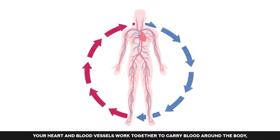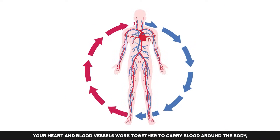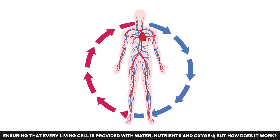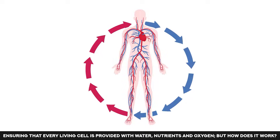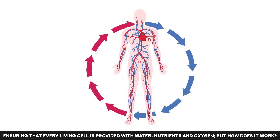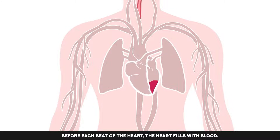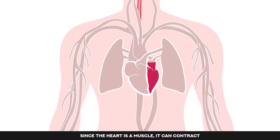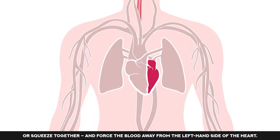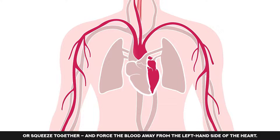Your heart and blood vessels work together to carry blood around the body, ensuring that every living cell is provided with water, nutrients and oxygen. But how does it work? Before each beat of the heart, the heart fills with blood. Since the heart is a muscle, it can contract or squeeze together and force the blood away from the left-hand side of the heart.